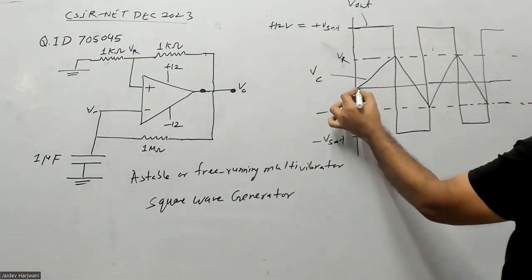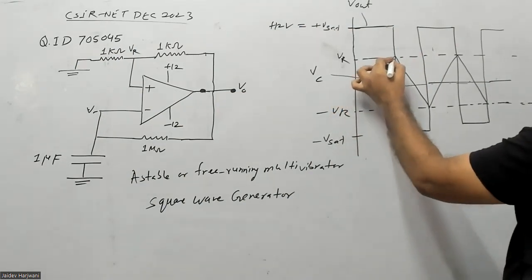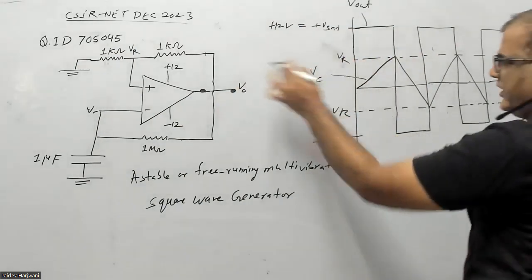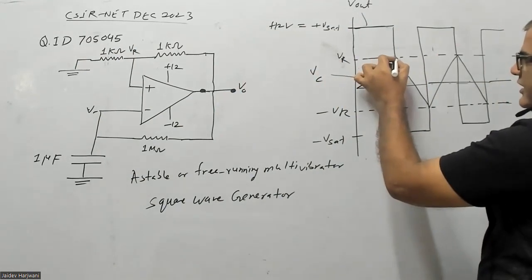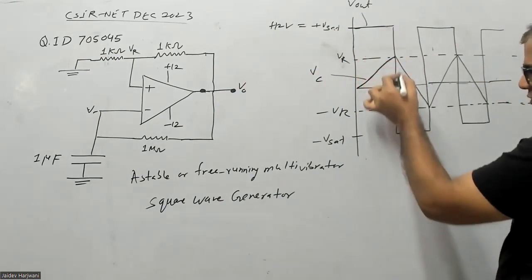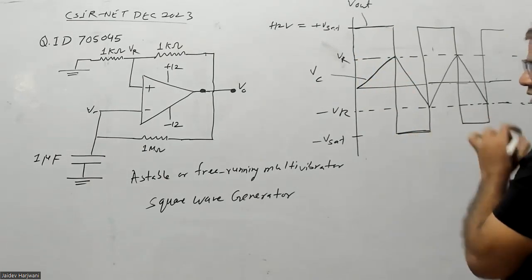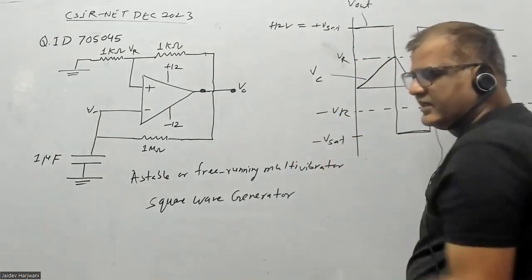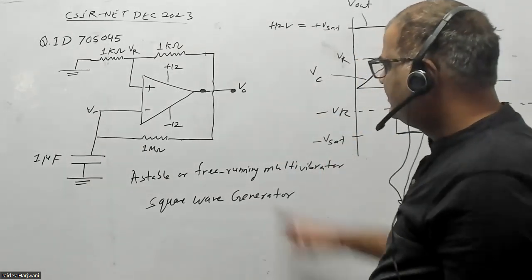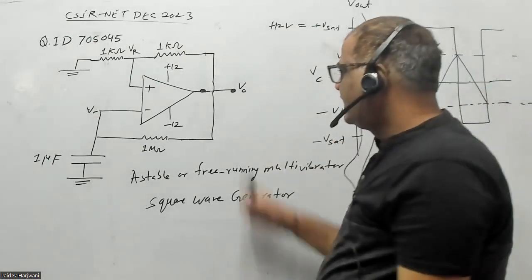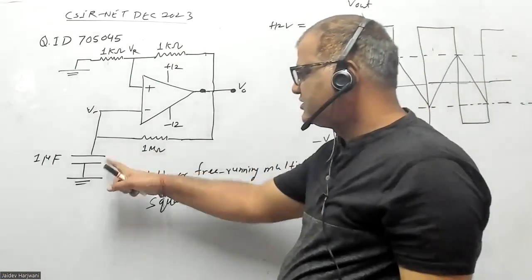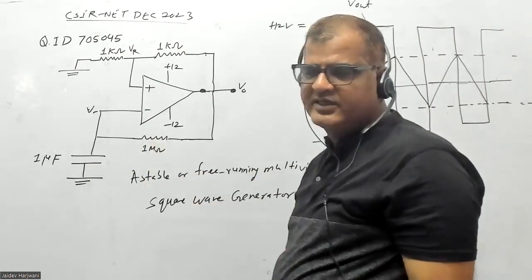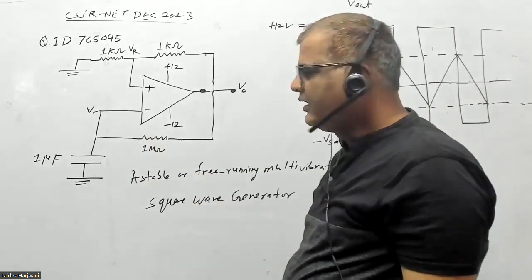This is the capacitor charging voltage when it is equal to VR. At that point, the output will go to negative saturation, and the voltage here will be minus 12 volts. This minus 12 volts will again make this capacitor charge in the opposite direction.